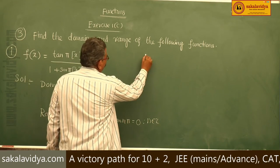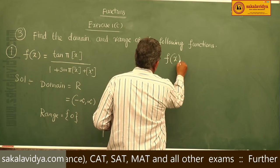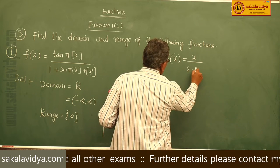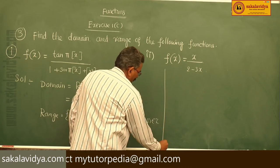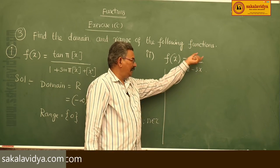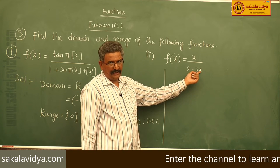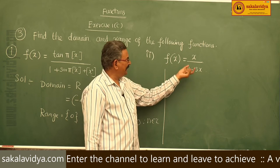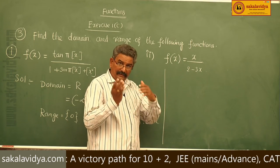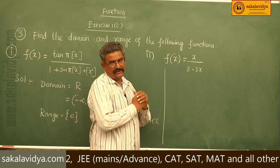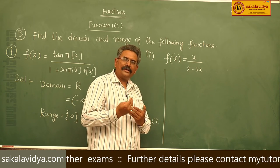Next, the second problem: f(x) = x / (2 − 3x). First, let us find the domain of this function. This function is in the form f(x)/g(x) — it is a rational function. If you put x = 2/3, then 2 − 3(2/3) = 0, so the function is not defined at x = 2/3.